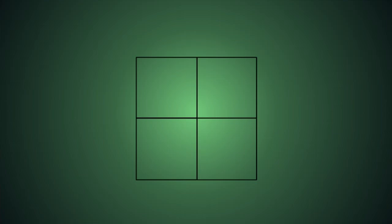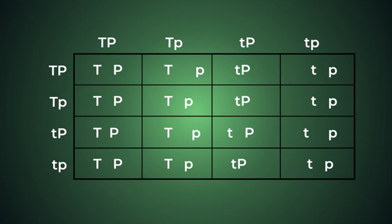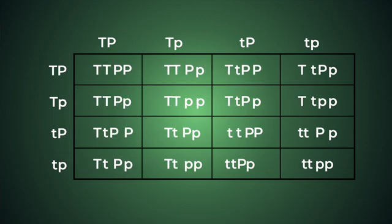Since tall and purple flowers are the dominant traits, these plants will all be tall with purple flowers. Now let's get to our Punnett square. The Punnett square for our dihybrid cross is going to be similar to that of our monohybrid cross, but instead of being two by two, it'll be four by four, giving us 16 different combinations. For each parent, we'll list out the possible gamete combinations: big T big P, big T little p, little t big P, and little t little p. We put these options at the top for one parent and at the side for the other.